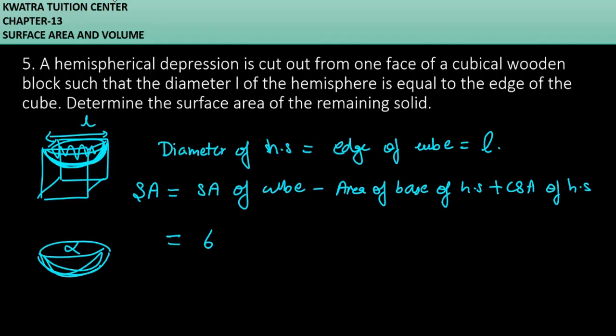So SA of cube is 6L² minus area of base of hemisphere. Area of base of hemisphere is minus πr². And then CSA of hemisphere is 2πr².